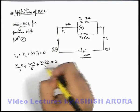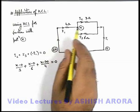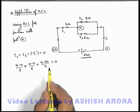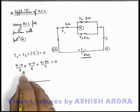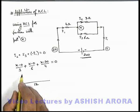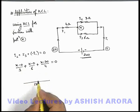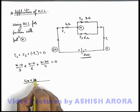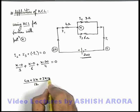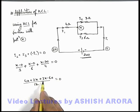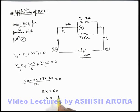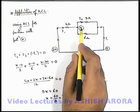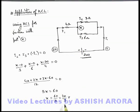Taking the LCM as 12 and writing the numerator: 4x + 2x + 3x − 60 = 0. Solving, 9x = 60, so x = 60/9 = 20/3 volts. The potential at the junction is 20/3 V.